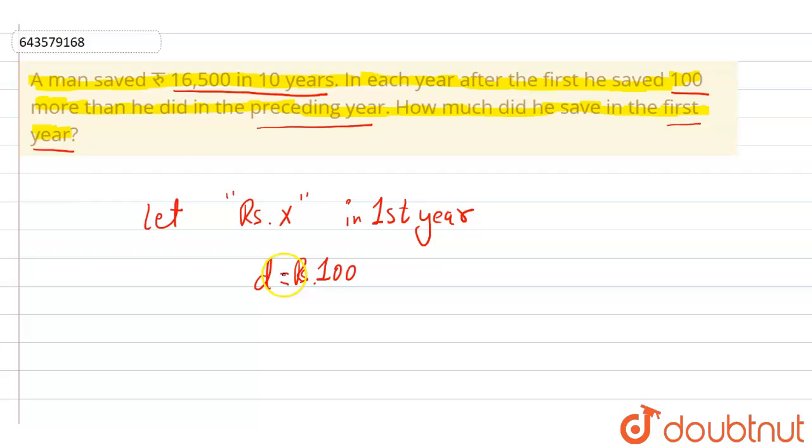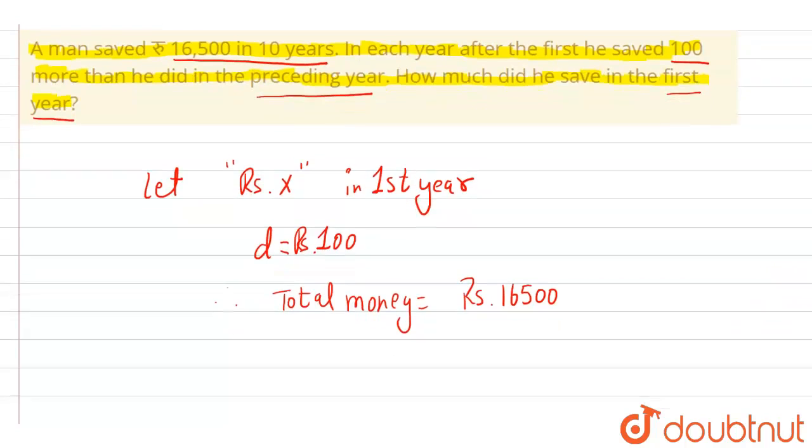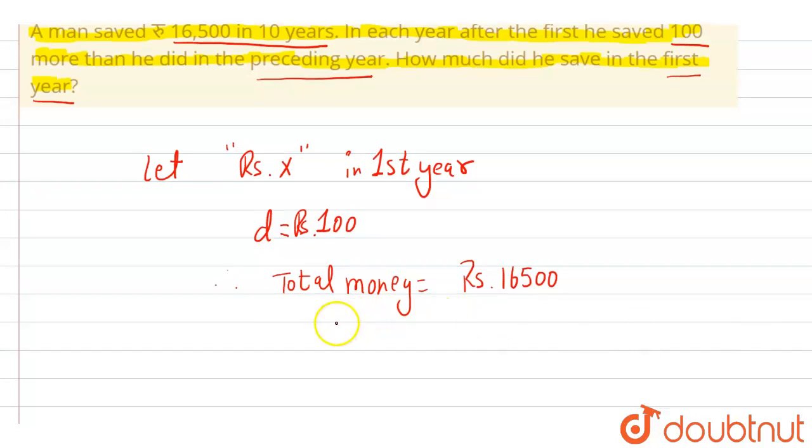We know the total money he saved is ₹16,500, and the total number of years is 10 years.